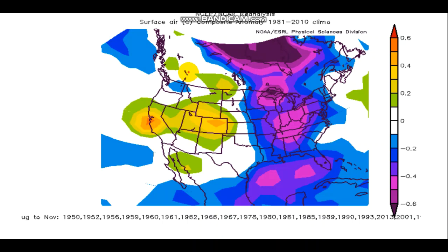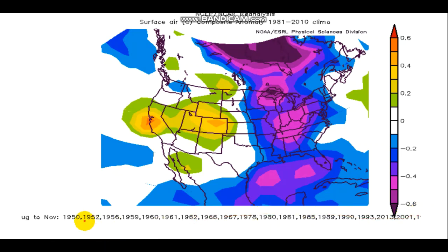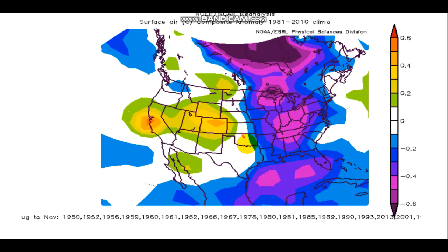Right now you can see August through November for a bunch of neutral-fall years — these are years that had a neutral fall, which we are forecasted to have this year. We're looking at a wide variety of years from around 1950 all the way to 2013–2014. Those neutral falls show a temperature anomaly where the Eastern half of the country is cooler while parts of the West are warmer — not terribly hot, but definitely above average. That is for the whole fall combined.